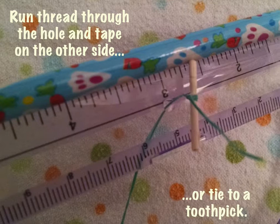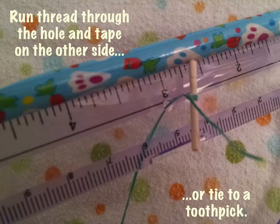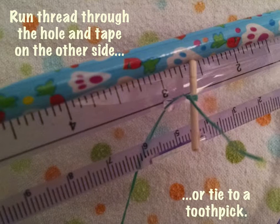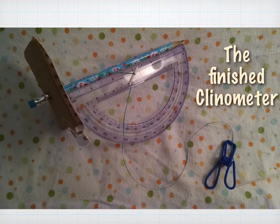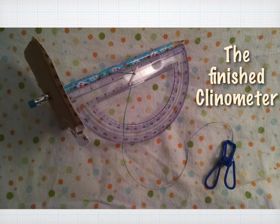Then you're going to thread your string through the hole of the protractor, and I like to tie it off with a little piece of toothpick. That way it's a nice loose fit, and it's always going to swing freely. Or you could tape it on the other side. Lastly, you're going to hang a clip from the end. So this is the finished clinometer.